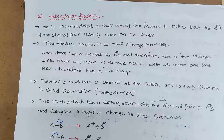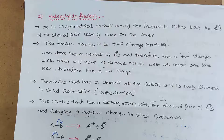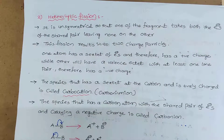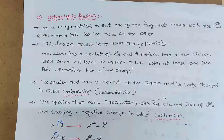One atom has the sextet of electrons and therefore carries a positive charge, while the other will have the octet with at least one lone pair and therefore has a negative charge. The species that has the sextet at the carbon and is positively charged is called a carbocation — earlier called carbonium ion. The species that has the carbon atom with the shared pair of electrons carrying a negative charge is called a carbanion.